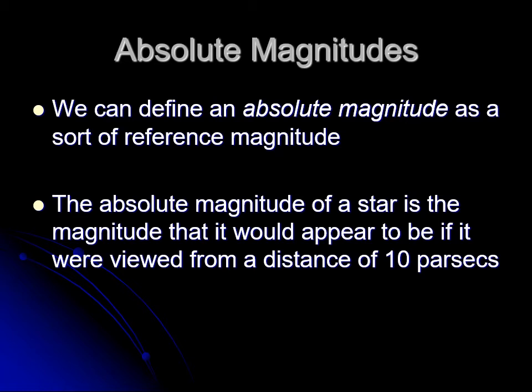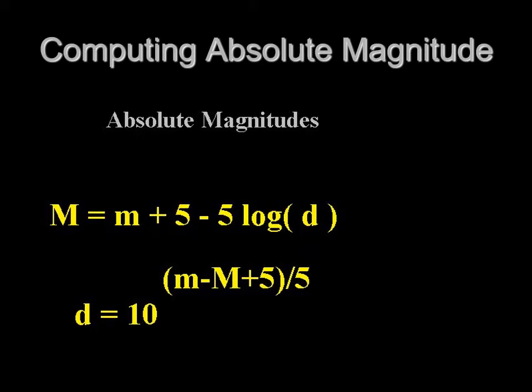Before we go on and talk about light, there was one more thing I wanted to talk about with absolute magnitudes. We had the equation for absolute magnitude: M = m + 5 - 5 log(d).